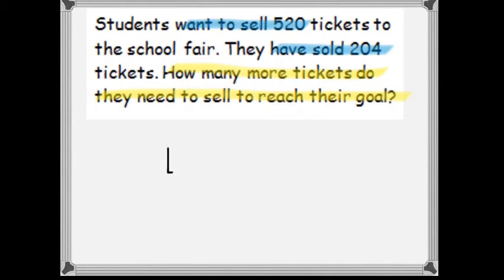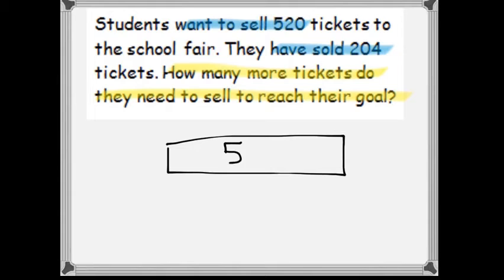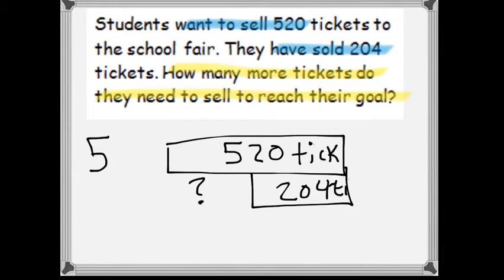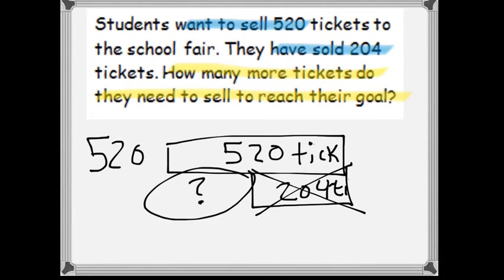We have a total of 520 tickets. They have already sold part of that — 204 tickets — and we are trying to find how much they need to reach their goal. Since we have the total and we have part of that total, in order to find the missing part, we need to subtract. Because if we take out what they already have out of 520, we will have left how much they still need.